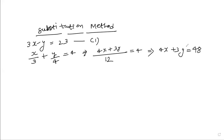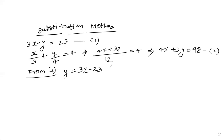In the substitution method, choose which variable to isolate first — any variable from either equation, whichever is easier. Here, from equation 1, y is easy to isolate. There's no rule that you must find x or y first; always choose what's easier according to the situation.